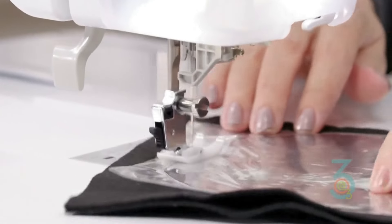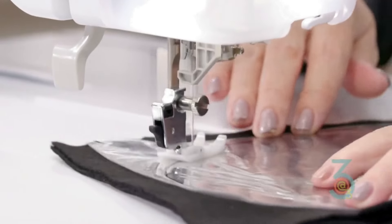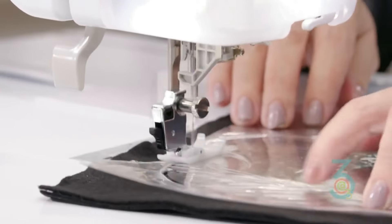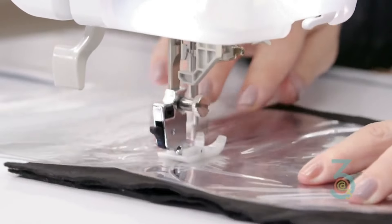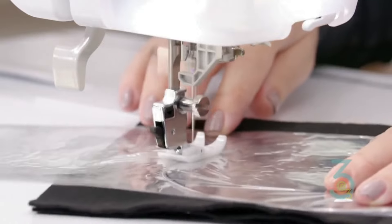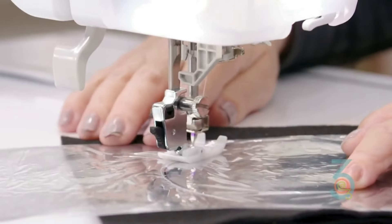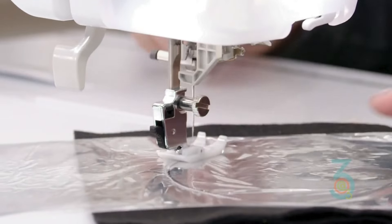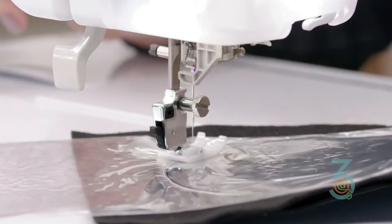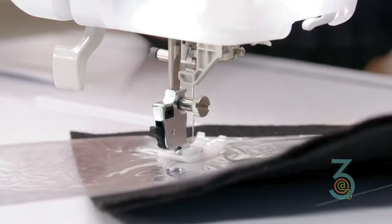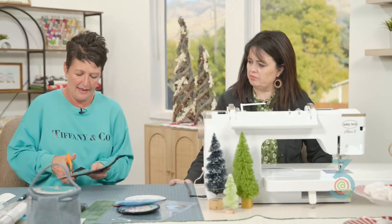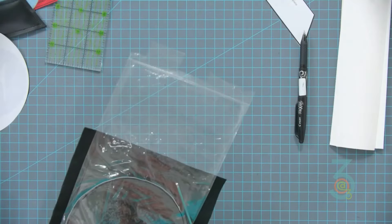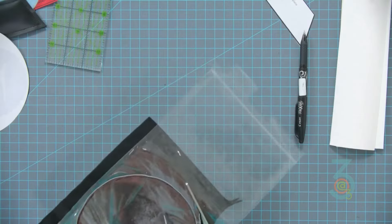If I was going to do this I would use black thread on mine so that it just blended in, but I want you to be able to see. Now we're going to cut this out about a quarter of an inch just away from the edge.